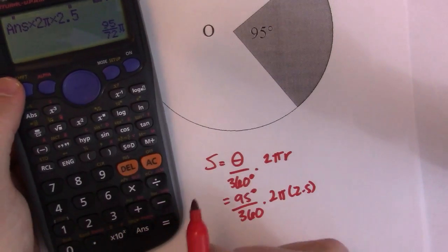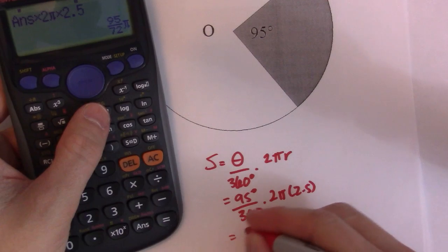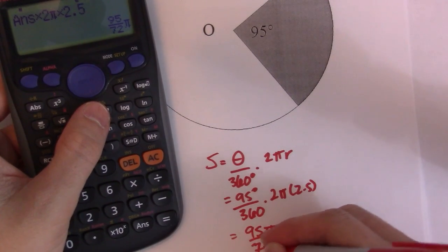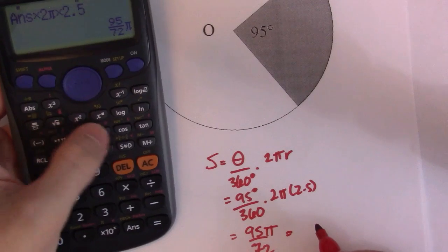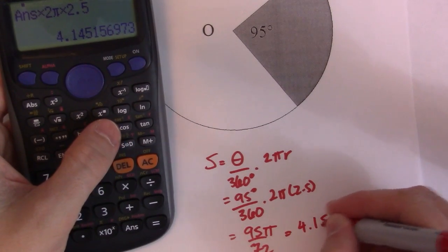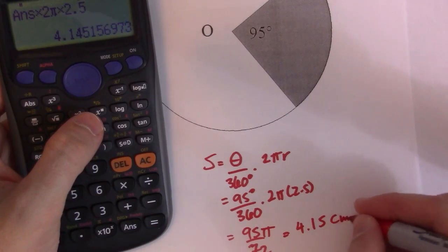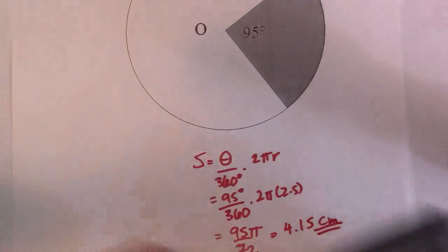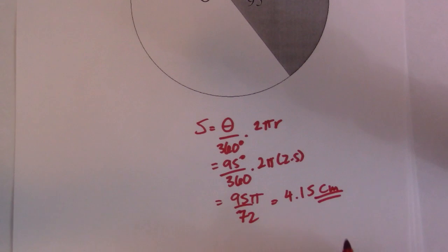And I get 95, so the exact answer is 95 pi over 72. If you want an approximate answer, then you can just change it to 4.15 centimeters. So again, just the unit of measurement, so it's just centimeters.